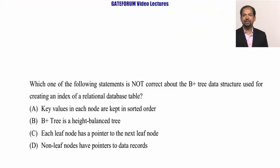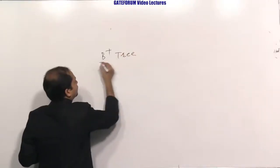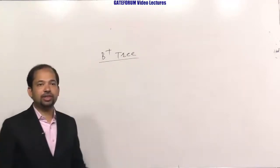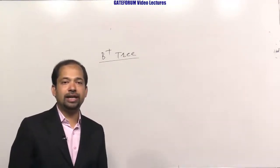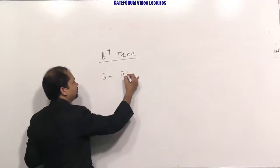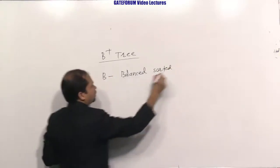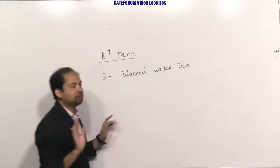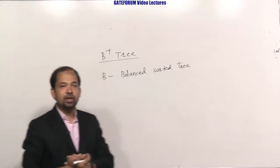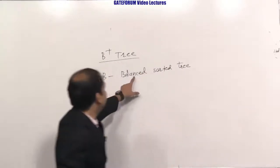Now let us solve this question about B+ Tree in DBMS. There are four options and the question asks which one is not correct. B stands for balanced sorted tree — note that B does not mean binary tree here. The first option says key values in each node are kept in sorted order, which is correct because the name itself says balanced sorted tree.